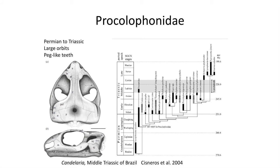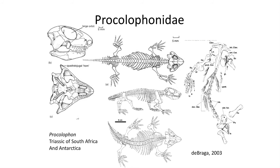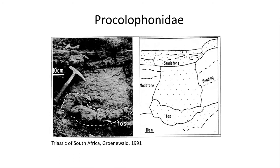The Procolophidae are the only group of parareptiles to survive the end-Permian extinction and remain rather diverse in South America during the early Triassic; they are also found in the Triassic of South Africa. They exhibit peg-like teeth and were primarily herbivores. The skulls were triangular shaped with large orbits when viewed from above. They had a sprawling stance and are believed to be semi-fossorial, digging burrows underground, from which their remains have been found in South Africa.